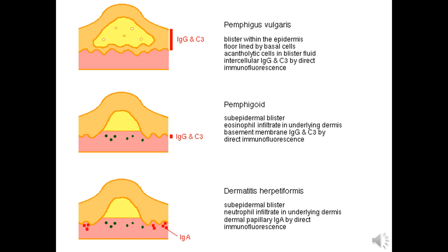In comparing three immunobullous diseases: in pemphigus, the blister content includes acantholytic cells floating in the fluid, and the main antibody is IgG plus complement, detected by direct immunofluorescence. In bullous pemphigoid, the infiltrate is eosinophils, the base of the blister is the dermis, and again IgG and complement are detected by direct immunofluorescence. In dermatitis herpetiformis, the immunoglobulin type is IgA, and the main reaction is within the dermal papillae, with IgA and eosinophils detected by direct immunofluorescence.